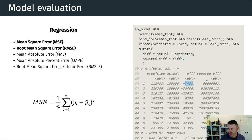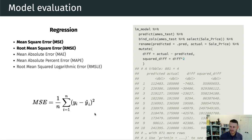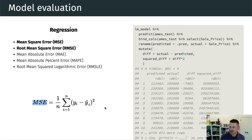Once we have these squared differences, we sum them all up and divide by the number of observations to get the mean squared error. Typically that value doesn't make a lot of intuitive sense on its own, but when we take the square root — that's the root mean squared error — it brings the value down into the units of measure of our response variable.